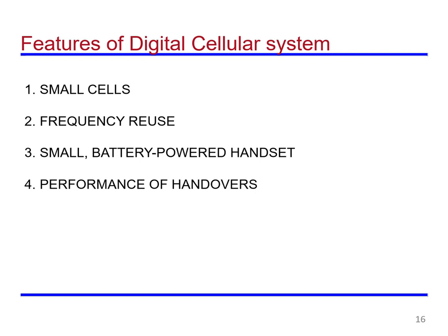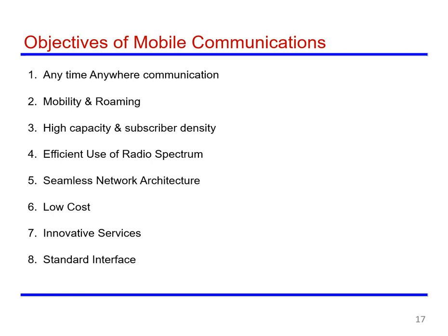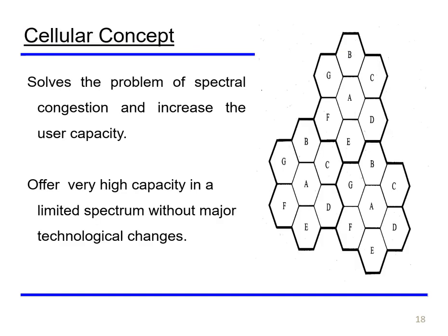Features of a digital cellular system include small cells, frequency reuse, small and battery-powered handsets, and performance of handovers. Objectives of mobile communication include anytime and anywhere communication, mobility and roaming, high capacity and subscriber density, efficient use of radio spectrum, seamless network architecture, low cost, innovative services, and standard interfaces. Overall, the cellular concept solves the problem of spectral congestion and increases user capacity, offering very high capacity in a limited spectrum without major technological changes.